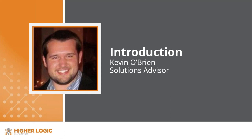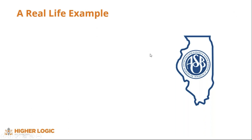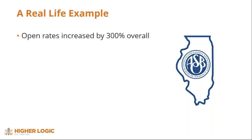We've seen a lot of real-life evidence of this with our own clients. Events are very important to the Illinois Association of School Business Officials, but like a lot of other organizations they just weren't getting the desired numbers of registrants or attendance, particularly for their annual events. After adopting one of our marketing automation platforms, here is some proof of their improved success — overall they were able to increase their open rates by about 300 percent.